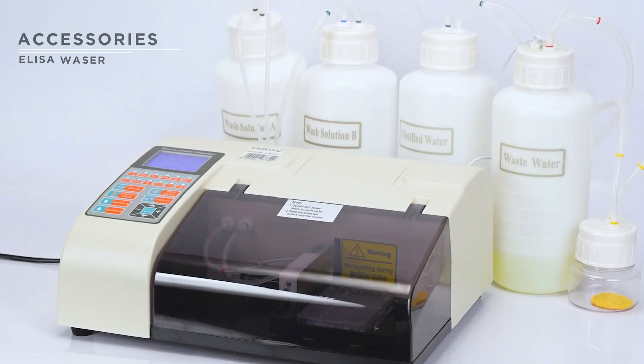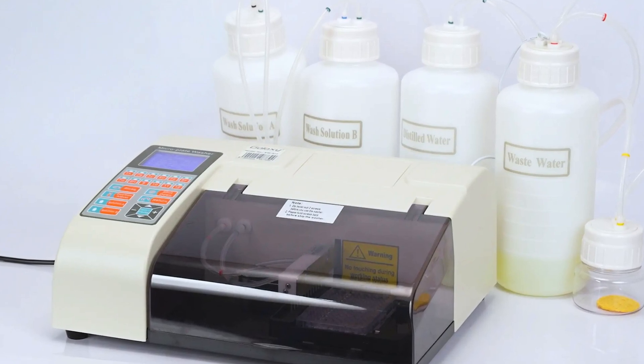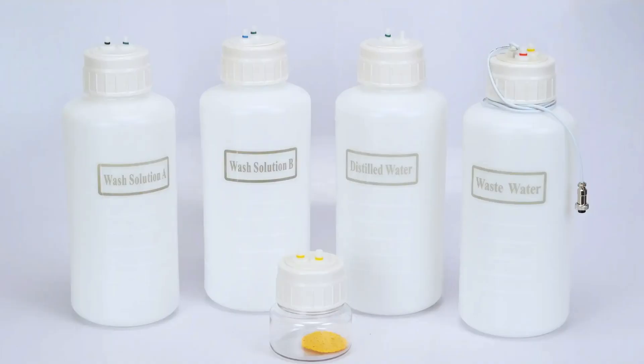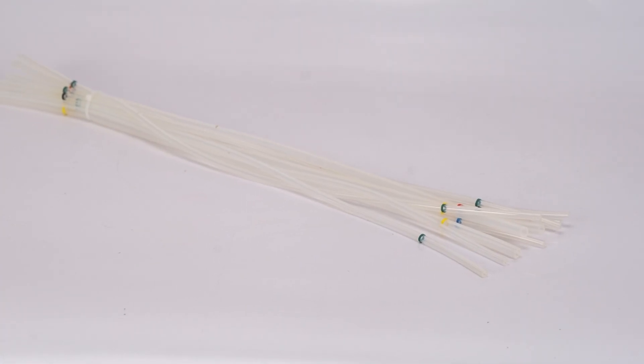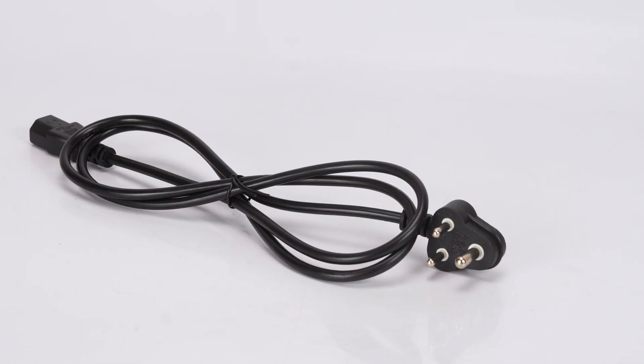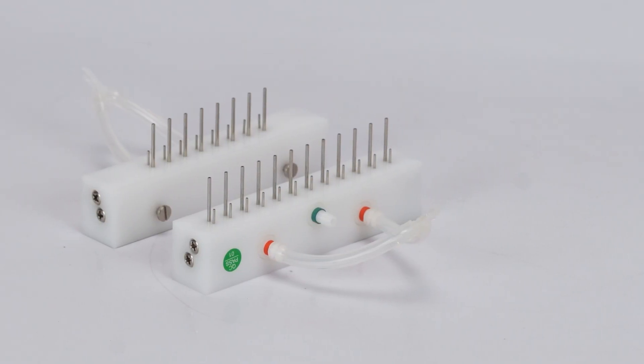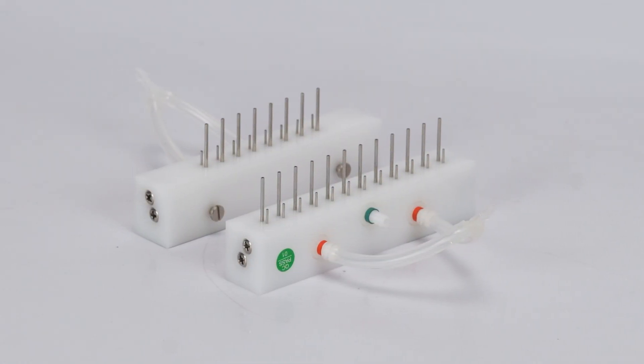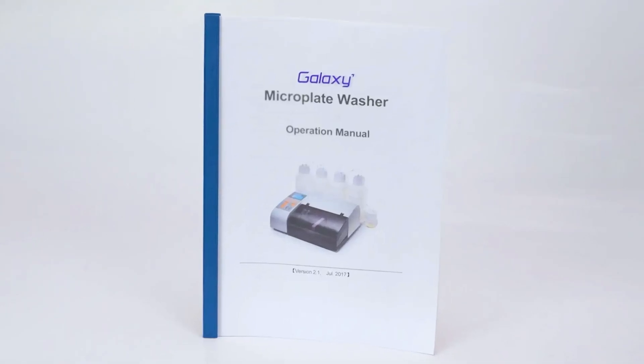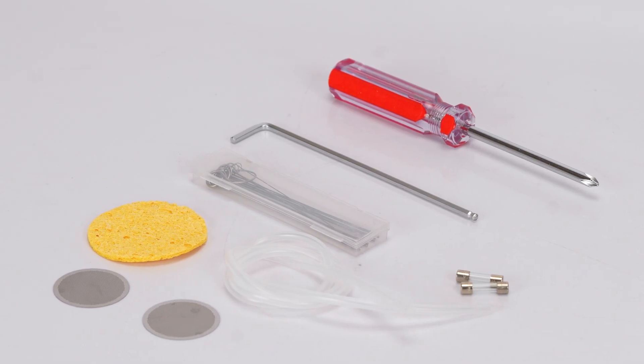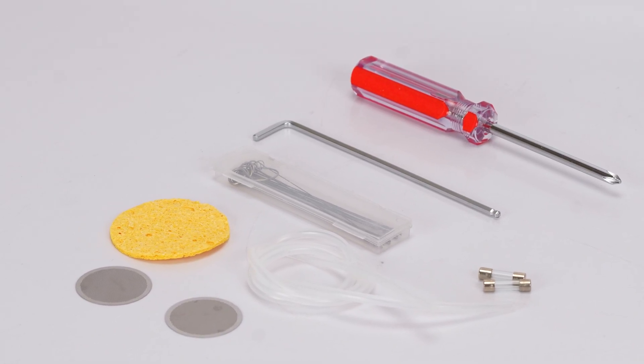Let's take a look at the EW812 and its components. This washer comes with four bottles: two for the washing solution, one for distilled water, and one for pressure. It also includes pipes, a power adapter, 8 and 12 channel manifolds, a manual, and cleaning and maintenance kits to ensure optimal performance.